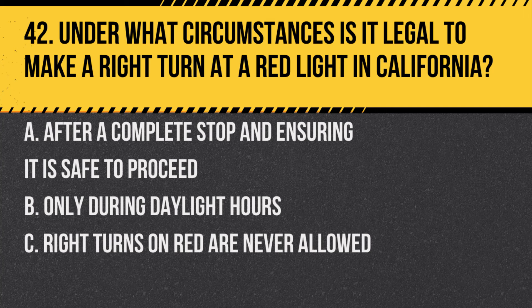Question 42. Under what circumstances is it legal to make a right turn at a red light in California? A. After a complete stop and ensuring it is safe to proceed. B. Only during daylight hours. C. Right turns on red are never allowed. Answer: A. After a complete stop and ensuring it is safe to proceed. Right on red is permitted unless otherwise posted.